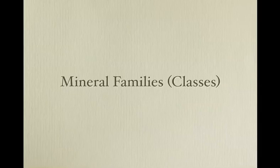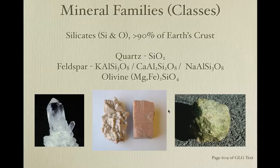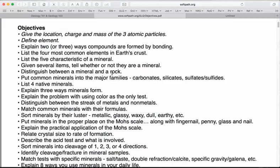There are classes or families of minerals. The one I just talked about — silicates — have silicon and oxygen and make over 90% of Earth's crust. Quartz is SiO₂; feldspars, three different kinds; olivine — notice they all have similar structures. Sand is mostly quartz. These are the objectives, linked from right here on each chapter.